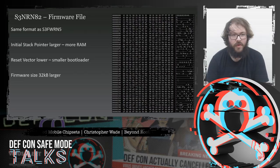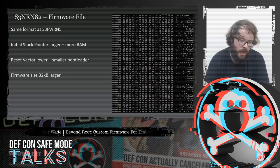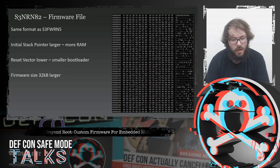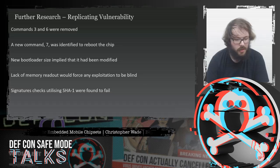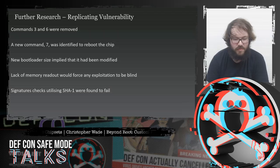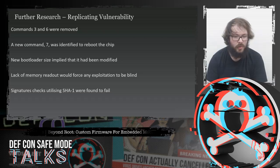I found this firmware file was in the same format as the S3FWRN5, except the initial stack pointer was much larger — 12K over the 8K of the previous chip — and the reset vector was lower, implying a much smaller bootloader. The firmware size was 32KB larger. Trying to port my previous exploit, I found commands 3 and 6 were removed — meaning I could no longer read out firmware — and a new command 7 was added which just rebooted the chip. The smaller bootloader implied other changes, and the lack of memory readout meant any exploitation would have to be done blind.